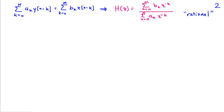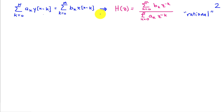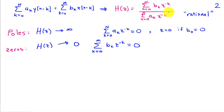We're particularly interested in the system function for difference equations, because this is the most common form we'll look at when designing filters. For a difference equation where the sum of a_k times past output values equals the sum of b_k times past input values, with a little algebra the system function is a ratio of polynomials in z^{−1}: the numerator is the sum from k=0 to M of b_k · z^{−k}, and the denominator is the sum from k=0 to N of a_k · z^{−k}.